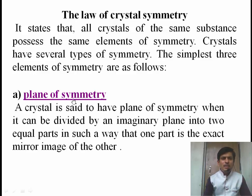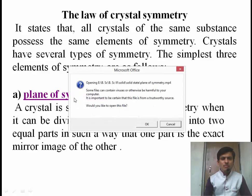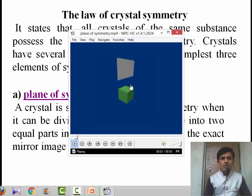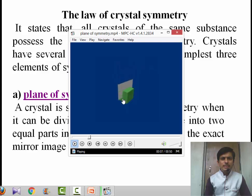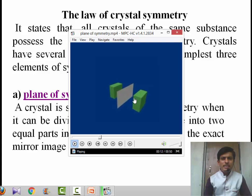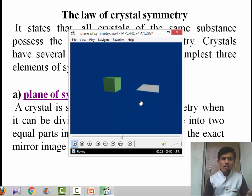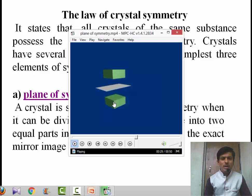To clarify this, let us see this clip. This is an imaginary plane. Due to this imaginary plane, this cube is cut into two different parts, but one part is the exact mirror image of the other part. Hence, we say this cube possesses a plane of symmetry. A cube has more than one plane of symmetry — consider another plane; due to this plane the crystal is divided into two parts, so we say it has a plane of symmetry.